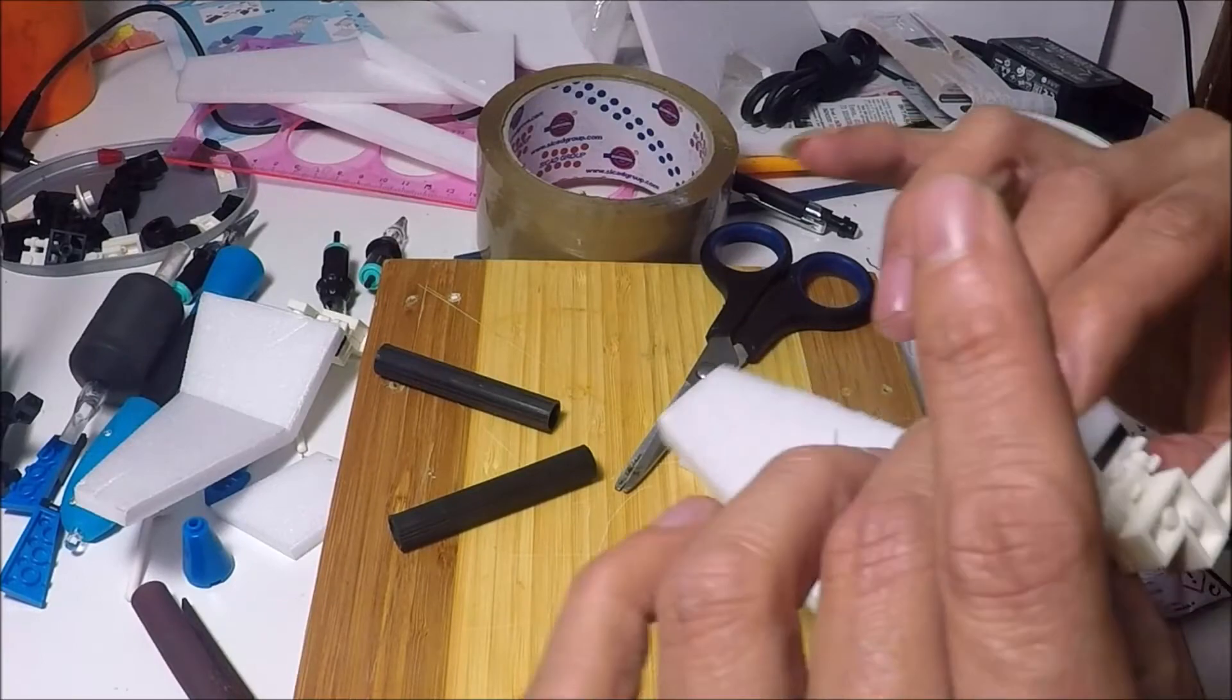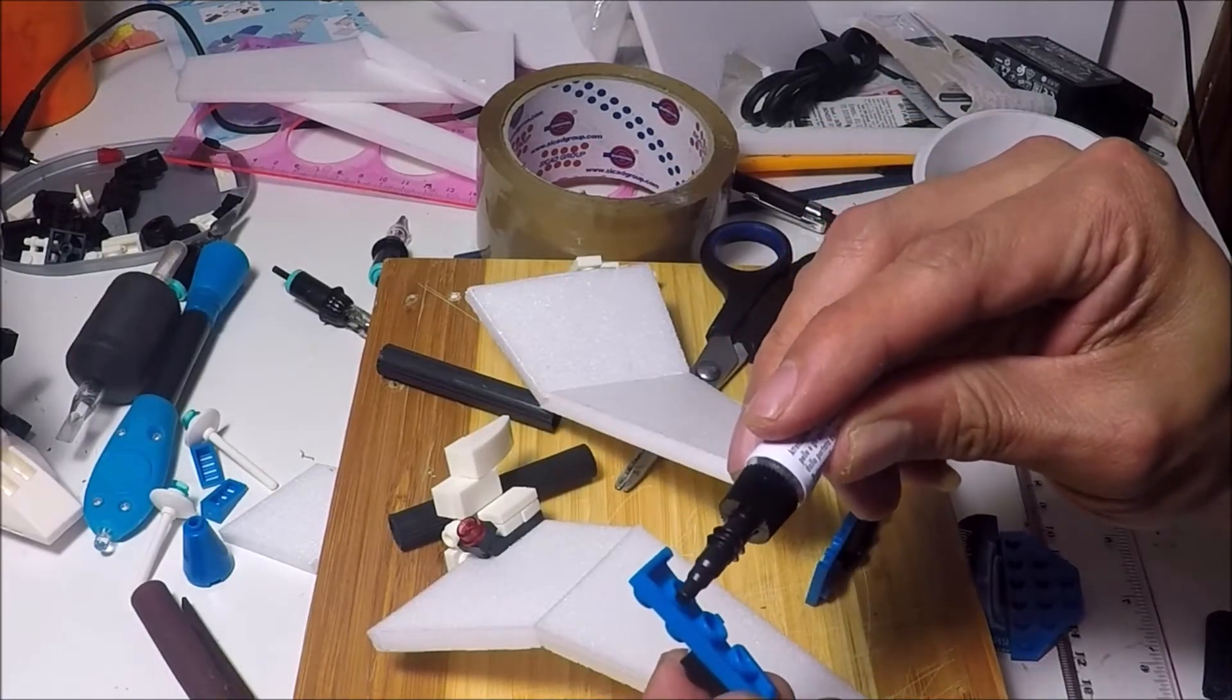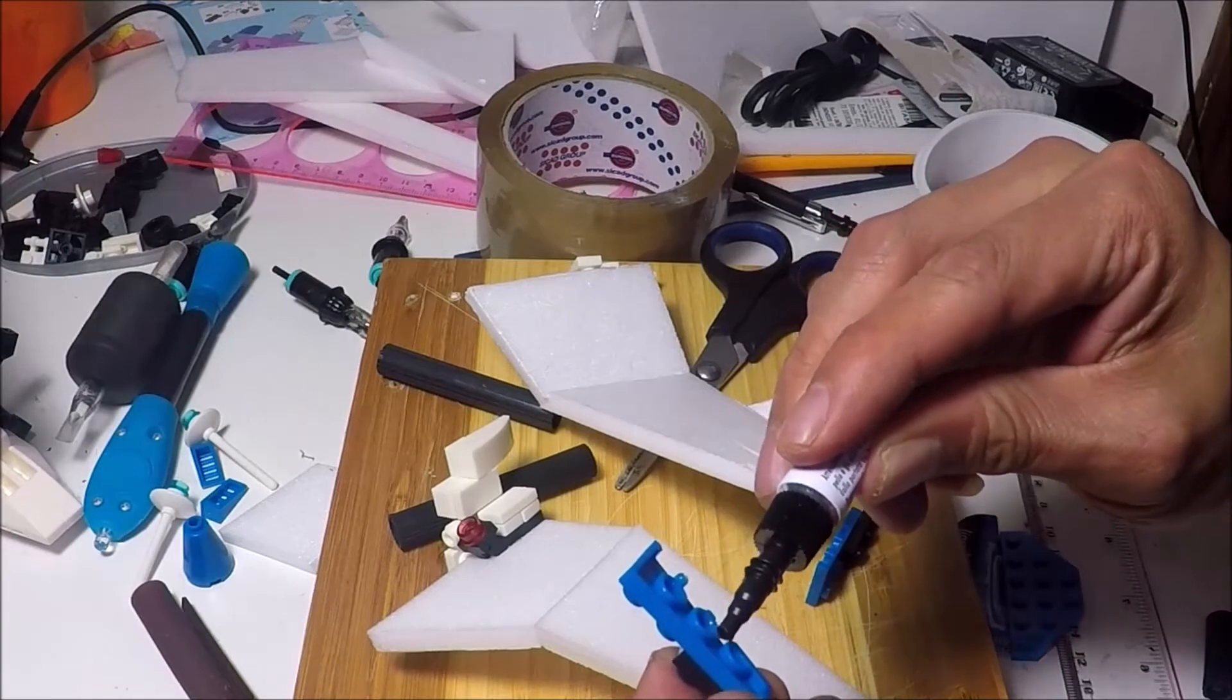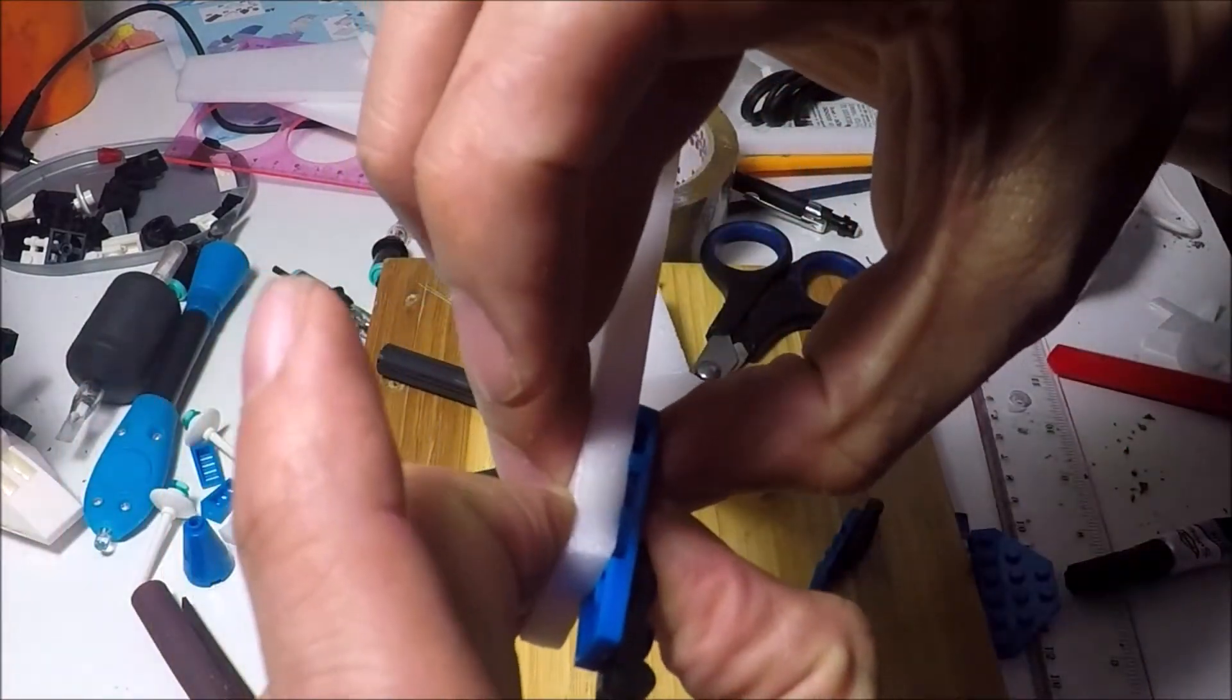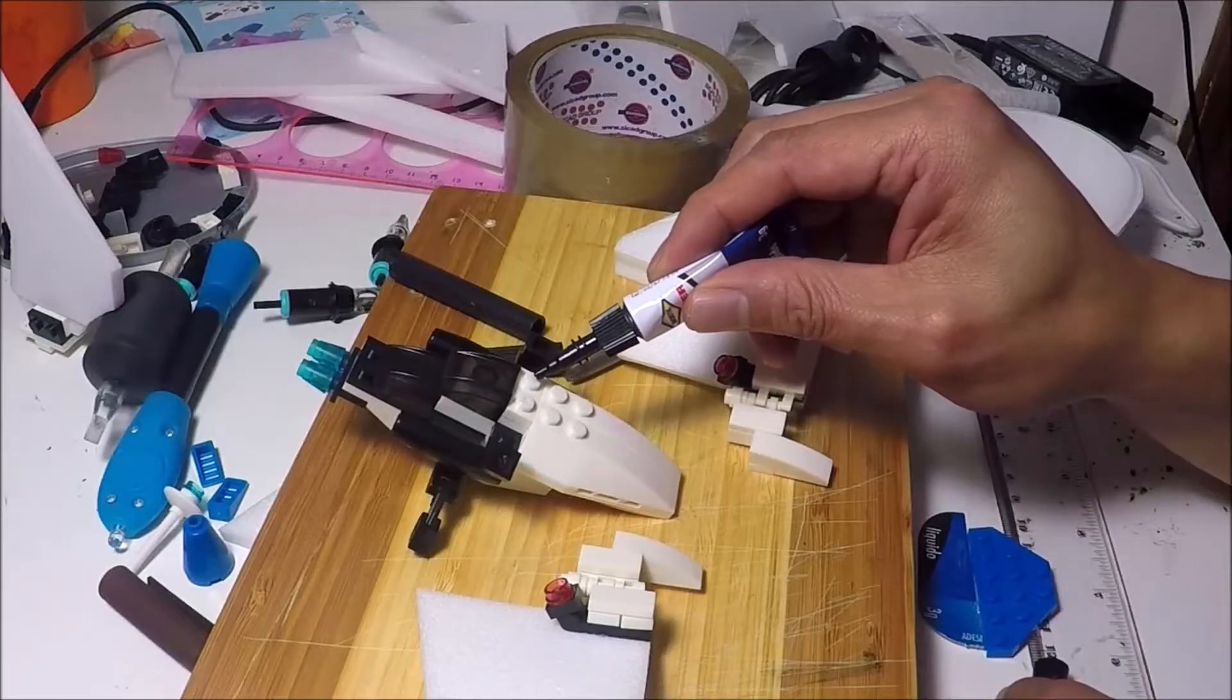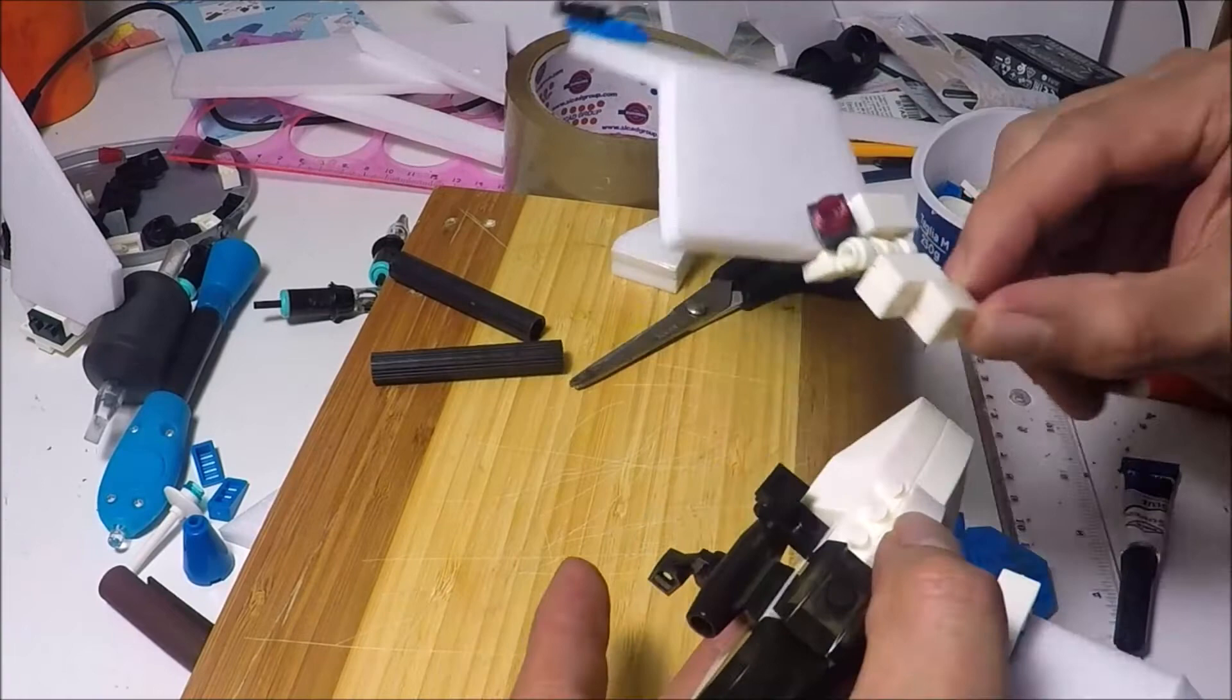So, this part, I'm attaching the wings to the hinges. There we are. Just a drop. You don't need to overdo it. It's gonna melt the styrofoam real quick. Here's what I guess would be the wing gun attachment.